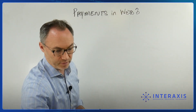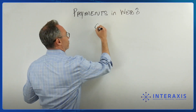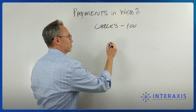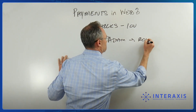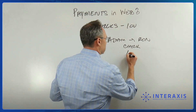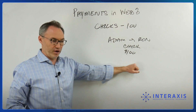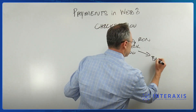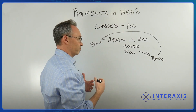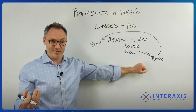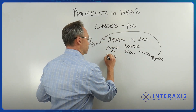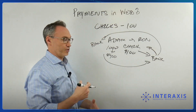Moving from cash to checks — a check is essentially an IOU. I give a check to Ron, a piece of paper saying I'm giving you this $100. I've signed it, written the amount, and it comes from my bank. Ron has to take that check to his bank, and his bank has to ask my bank: does Adam have the money? His bank takes $100 out of my account and sends it to Ron's account. That's where checks came from.